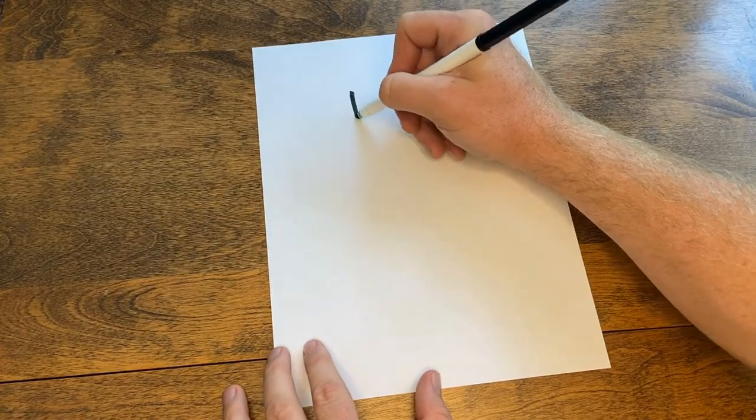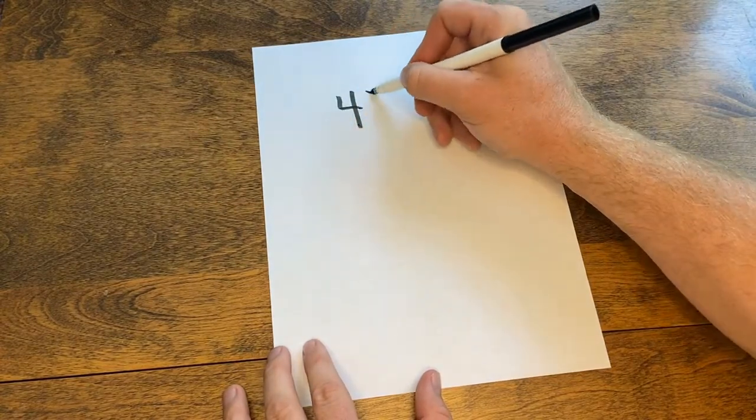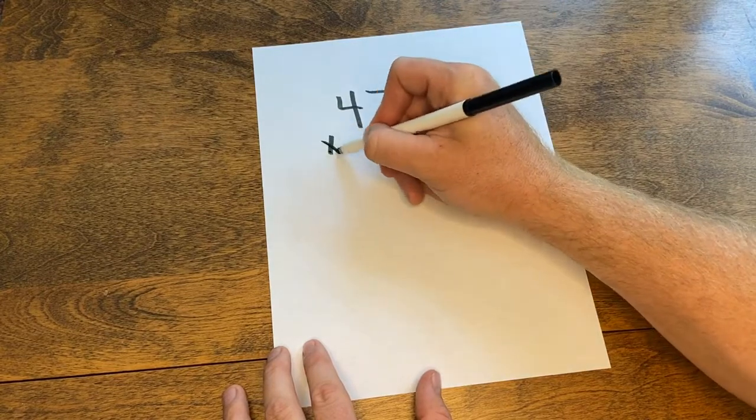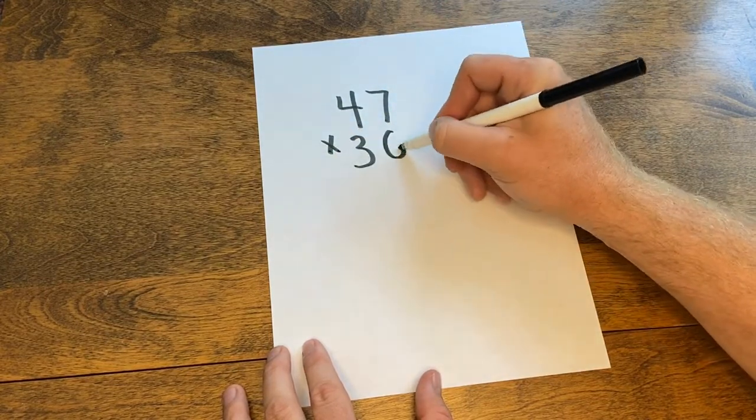The first thing we want to do is make sure we carefully copy our numbers from the computer screen onto our scrap paper. Make sure we're lining up our ones with the ones and our tens with the tens.